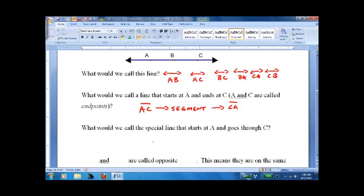One more step. We call a special line that starts at A and goes through C. So it's here and then it just keeps going. We call this a ray. A ray looks like this.